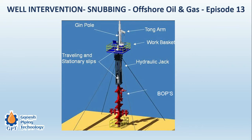This is a very short episode on well intervention. As we have seen, well intervention is a maintenance activity carried out to enhance the productivity of a well. We have seen that well intervention involves inserting a wire or elements through the Christmas tree, with tools attached at the bottom. Earlier we covered coil tubing and wireline operations, where a wire or coil is inserted into the well and wound on a drum.